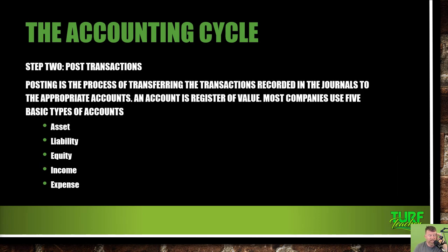Step two: post the transactions. Posting is the process of transferring journal entries to the appropriate accounts. Most companies use five basic account types: asset (e.g., your truck), liability (the loan on the truck), equity (e.g., you owe $30,000 on a truck worth $50,000, so $20,000 in equity), income (money brought in using that equipment), and expense (oil, gas, labor, materials used on a job).